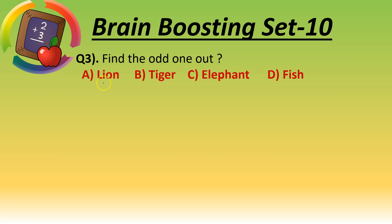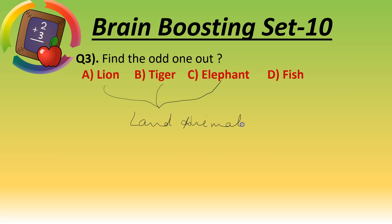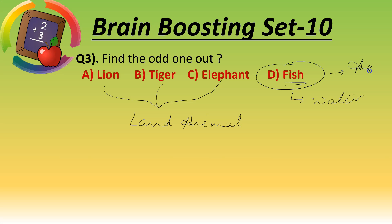Lion, tiger, and elephant — these three are land animals because they live in the jungle. Fish lives in water. So fish is the odd one out.